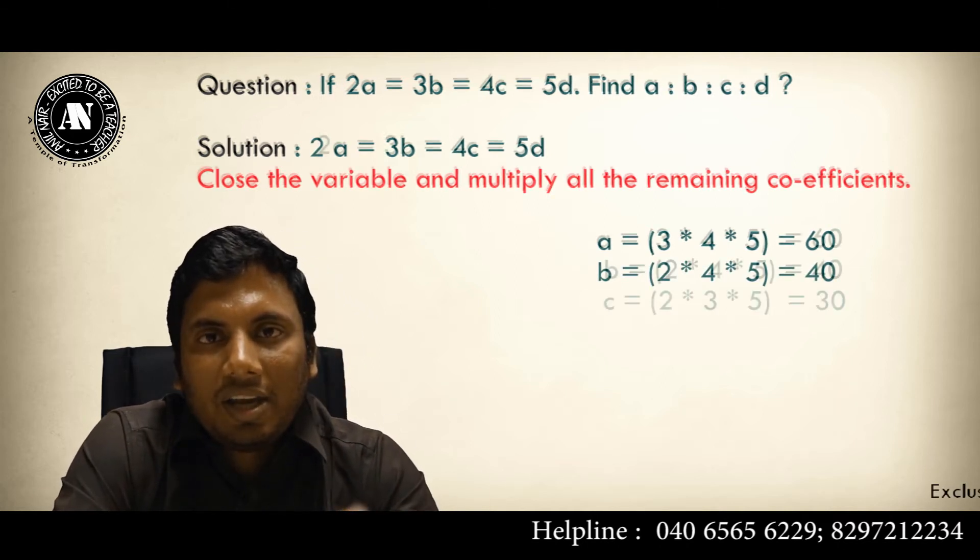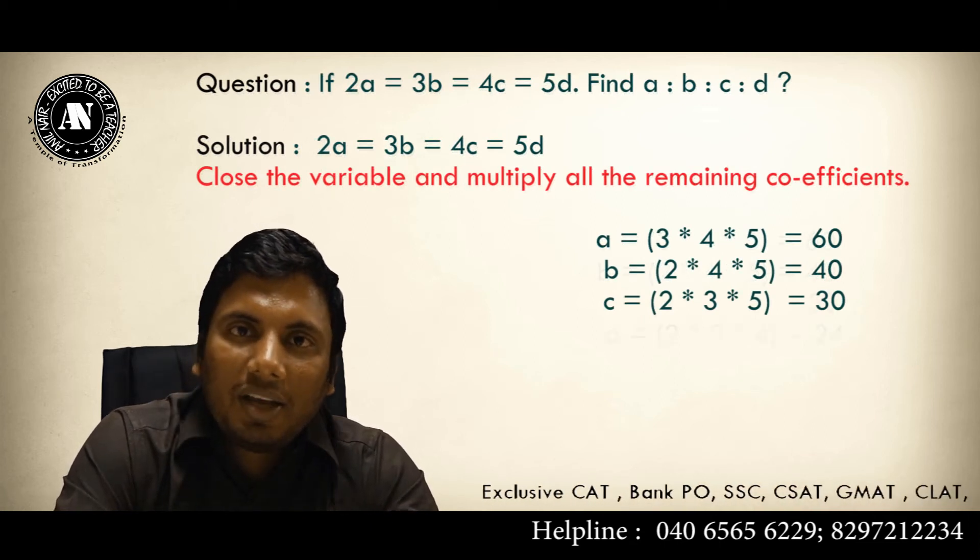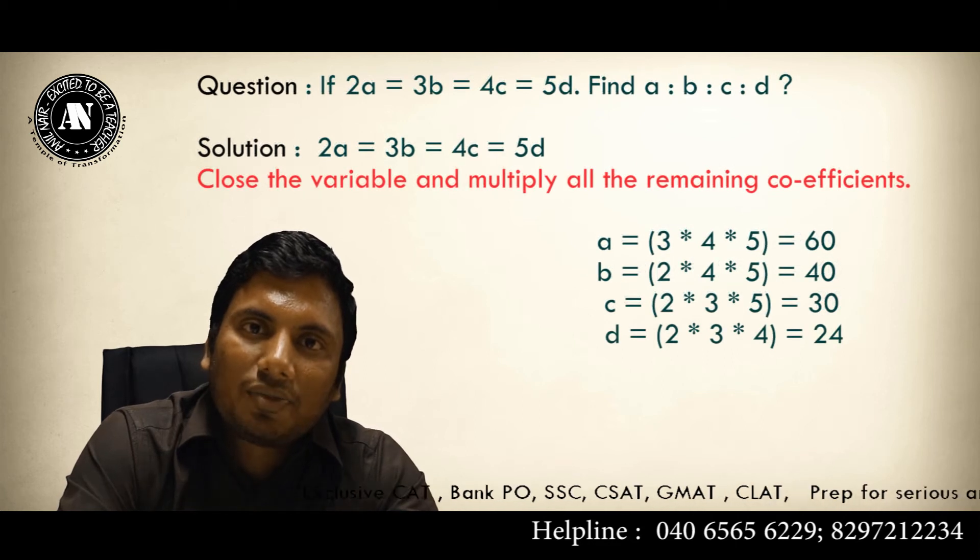To get C, close C and multiply all the remaining: 2 times 3 is 6, 6 times 5 is 30. To get D, close D and multiply all the remaining. What will be the answer? 2 times 3 is 6, 6 times 4 is 24.